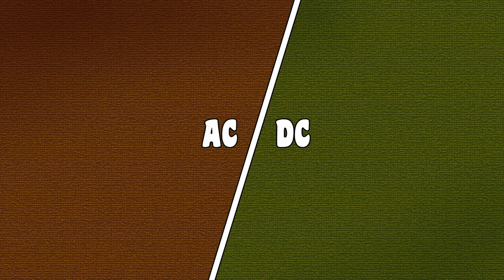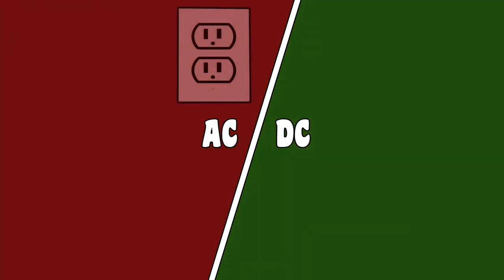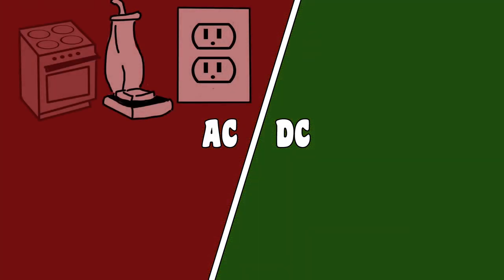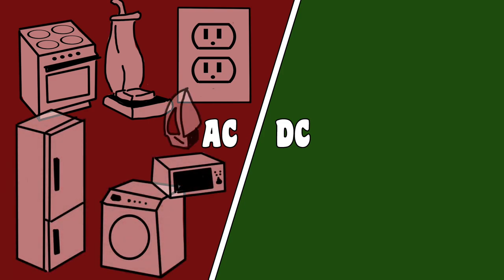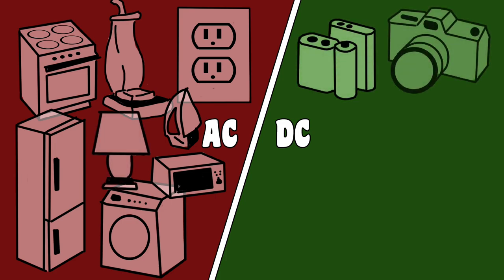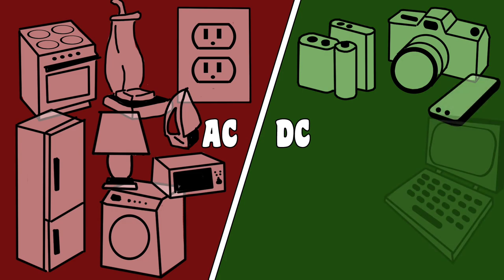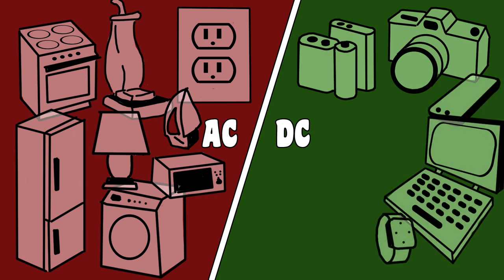We use both AC and DC every day. The electricity coming into our homes is alternating current. Lights, washing machines, refrigerators, and many other household appliances run on AC. Batteries supply direct current to portable devices like laptops, cell phones, and cameras.